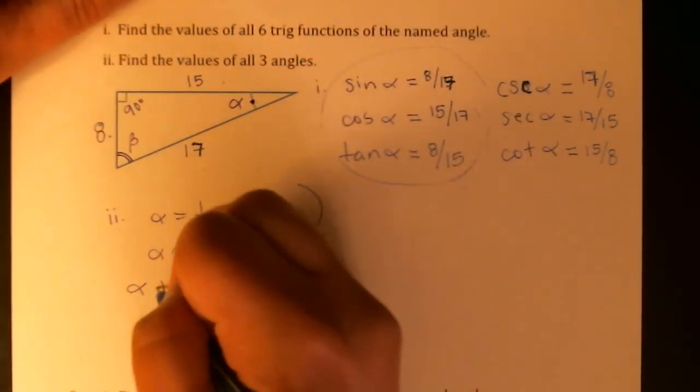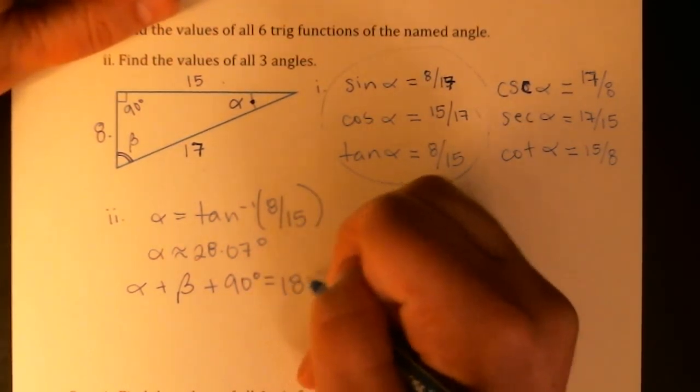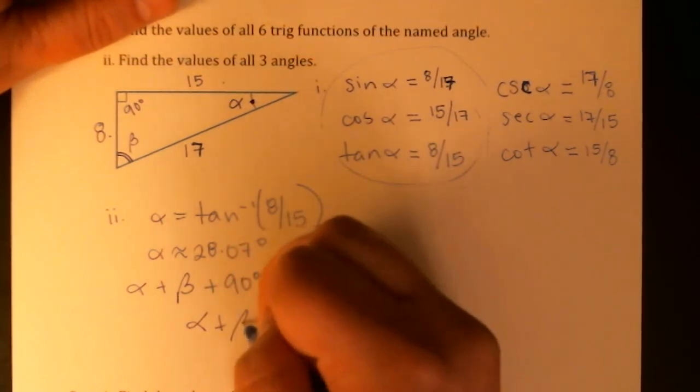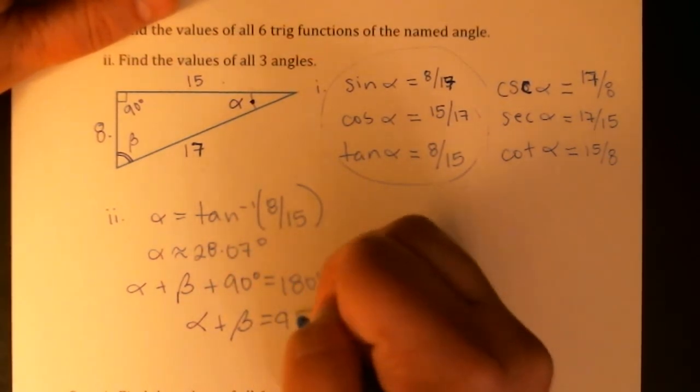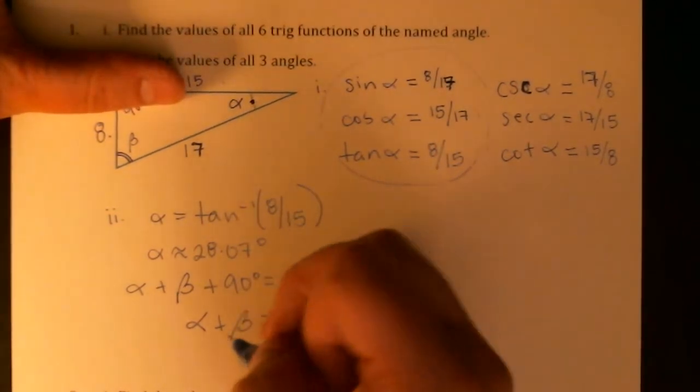So here's what we have. We have alpha plus beta plus 90 degrees is equal to 180 degrees, which means alpha plus beta is 90 degrees.